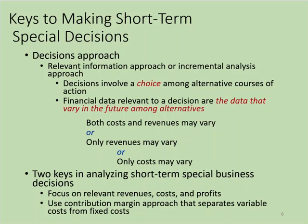Because fixed costs and variable costs behave differently, we have to analyze them separately. Contribution margin income statements, which isolate costs by behavior — meaning variable or fixed — help managers gather the cost behavior information they need. Keep in mind that unit manufacturing costs are mixed costs, so they can mislead managers. If you use unit manufacturing costs in your analysis, you must first separate them into their fixed and variable components.